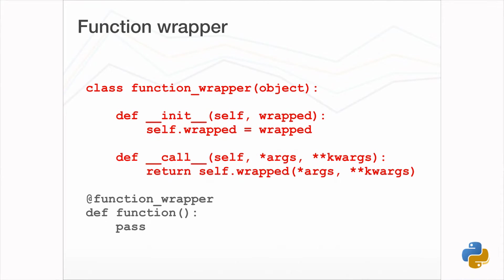The more illustrative way of showing how a wrapper works is to implement it using a class object. The class instance is initialised with and remembers the original function object. When the now-wrapped function is called, it is actually the __call__ method of the wrapper which is invoked, and this in turn calls the original wrapped function.